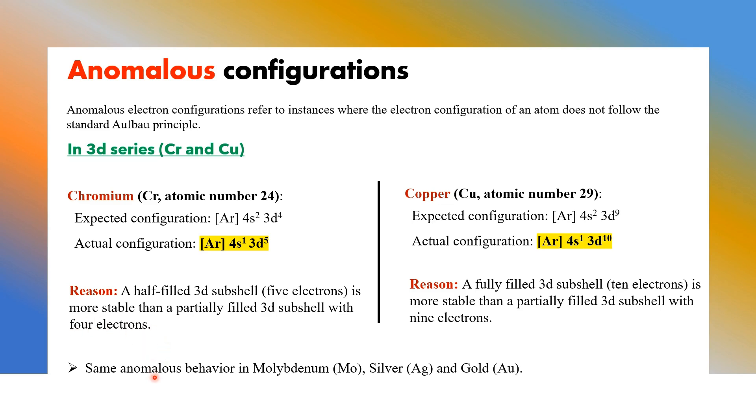The same pattern is following the next 4d series: molybdenum, silver and gold. So these are anomalous configurations. So when we are writing the configurations for chromium, copper, molybdenum, silver and gold, you need to follow this anomalous configurations.